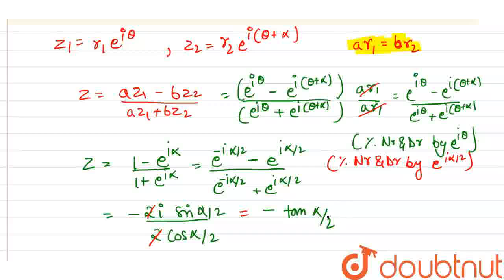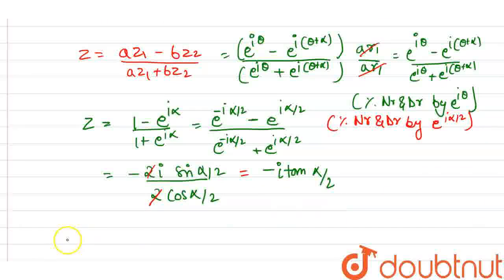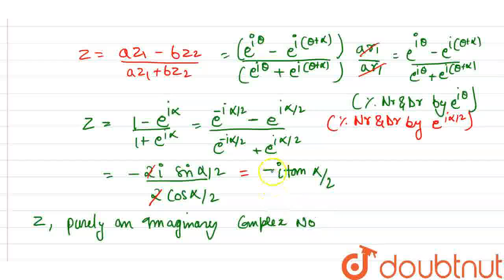So now we have this. Iota is in negative, and alpha by 2. It clearly, we can clearly conclude that z is purely an imaginary complex number. Why? Because there is only iota. There is no real part. Because there is no real part, only imaginary part is there. So it is purely an imaginary complex number, purely an imaginary complex number. Because there is no real part. Thank you.